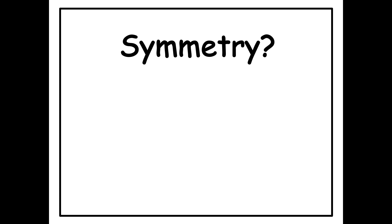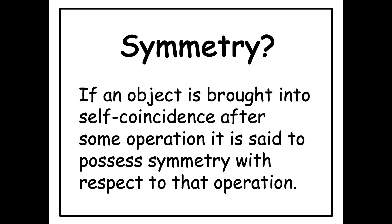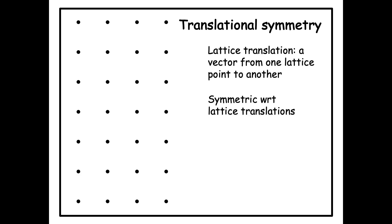What is symmetry? We can give a general definition of symmetry applicable to geometrical objects and crystallography: if an object is brought into self-coincidence after some operation, it is said to possess symmetry with respect to that operation. By operation, we mean some geometrical operation like translation, rotation, reflection, etc. Translation is the first operation we should consider. Lattice translation — a vector from one lattice point to another lattice point is called lattice translation, like the vector shown here going from one lattice point to another lattice point.